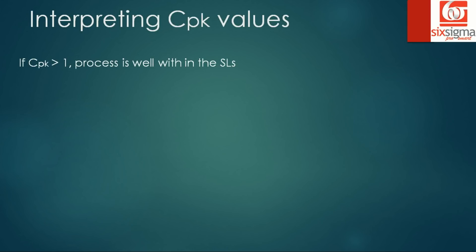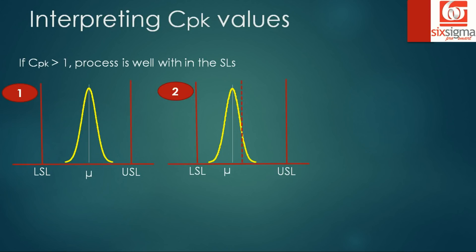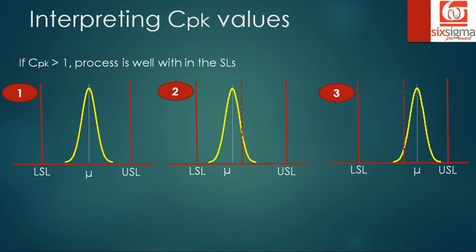When CPK is greater than one, it implies the process is well within the specification limits, but there are multiple possibilities. Possibility one: the process is perfectly centered and well within the limits. Possibility two: the process mean has shifted slightly but is still within the specification limits. Possibility three: the mean has shifted to the other side but the process remains within specification. In all these cases, CPK would be greater than one.